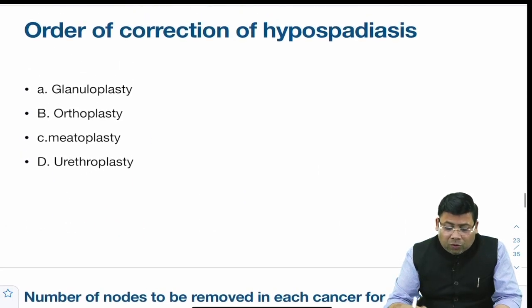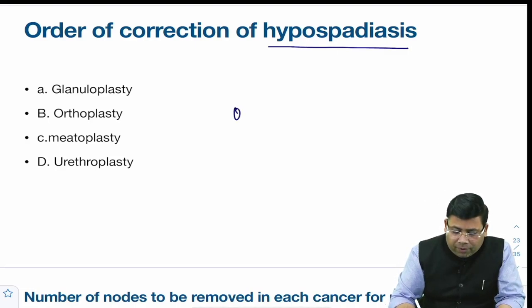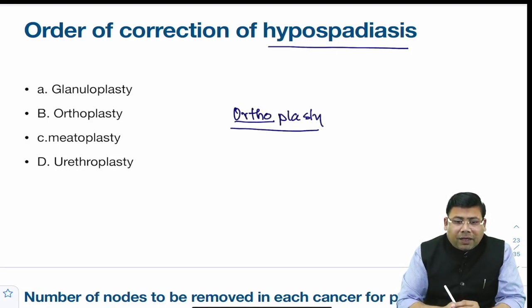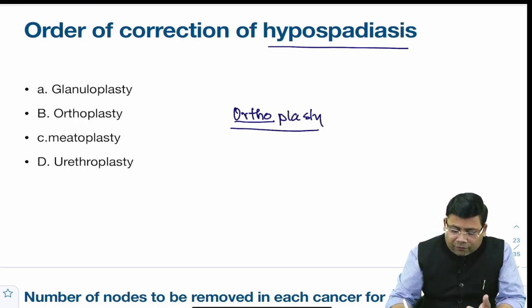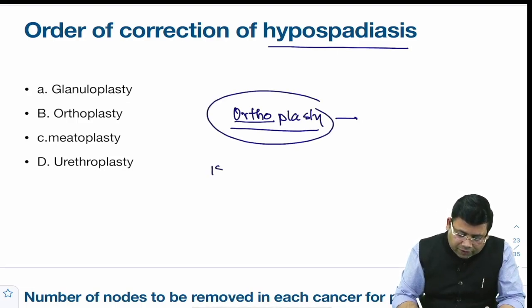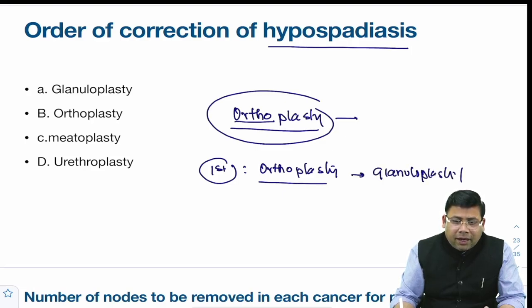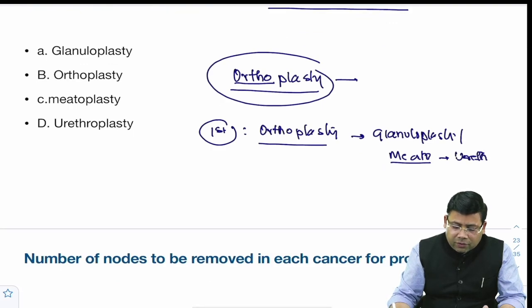There was a question on the order of correction in hypospadias. The first thing done is orthoplasty — chordee correction. Then we go for glanuloplasty, meatoplasty, and urethroplasty. So the sequence is: orthoplasty first, then glanuloplasty, meatoplasty, and urethroplasty.